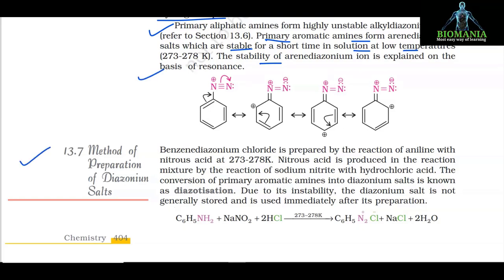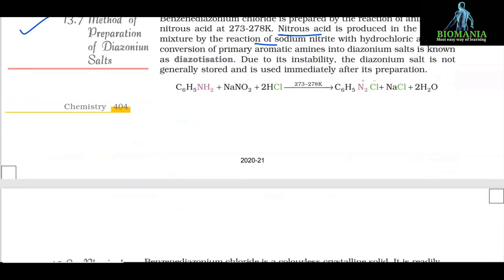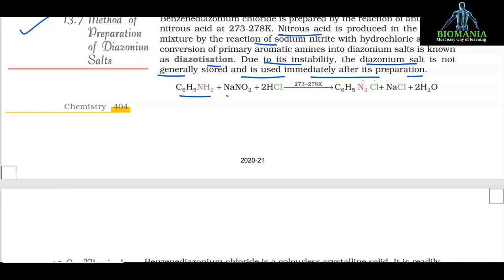13.7 Method of Preparation of Diazonium Salts. Benzene diazonium chloride is prepared by the reaction of aniline with nitrous acid at 273–278 K. Nitrous acid is produced in the reaction mixture by reaction of sodium nitrite with hydrochloric acid. The conversion of primary aromatic amines into diazonium salts is known as diazotization. Due to its instability, the diazonium salt is not generally stored and is used immediately after preparation: C6H5NH2 + NaNO2 + 2HCl (273–278 K) → C6H5N2+Cl⁻ + NaCl + 2H2O.